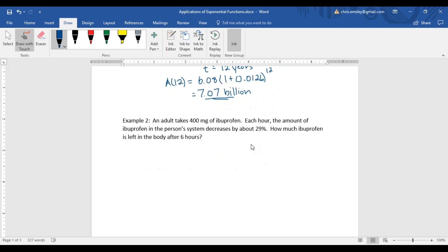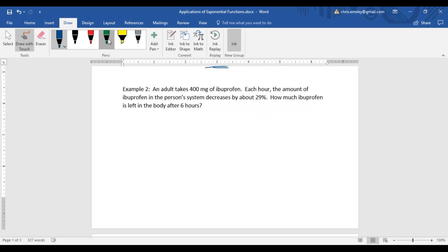Let's look at another example. An adult takes 400 milligrams of ibuprofen. Each hour, the amount of ibuprofen in the person's system decreases by about 29%. How much ibuprofen is left in the body after 6 hours? We have an initial amount, our A sub 0 is 400 milligrams.